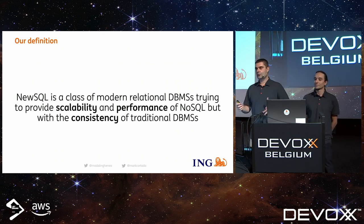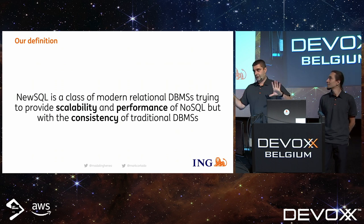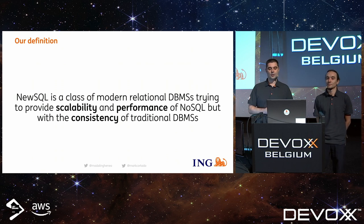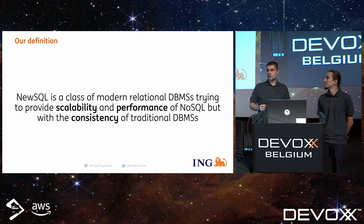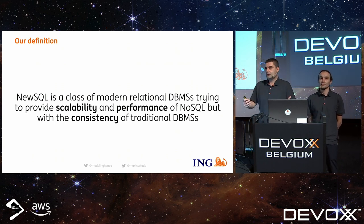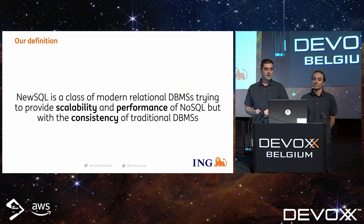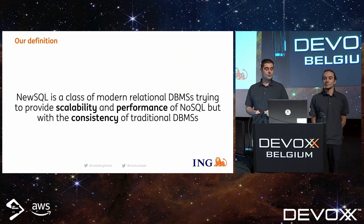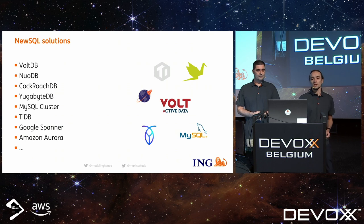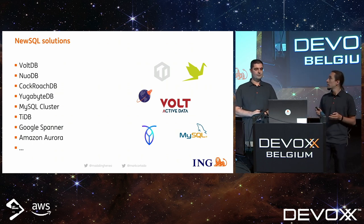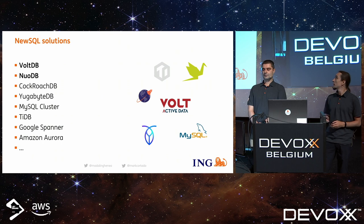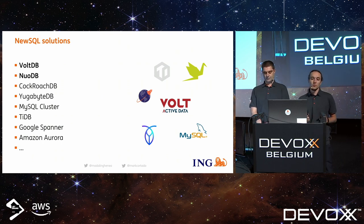To get started, we thought it would be nice to propose a definition of what a NewSQL database is. Our definition is that NewSQL is a class of modern relational database management systems trying to provide the scalability and performance of NoSQL but with the consistency of traditional database management systems. Scalability, performance, and consistency are bolded because we will refer to these terms throughout the presentation. Here is a list of NewSQL solutions — quite varied, with big players like Google, Amazon, or MySQL — but for this talk we will only focus on VoltDB and NuoDB.